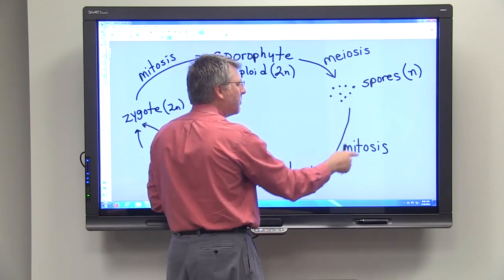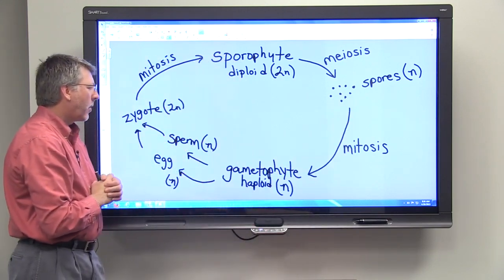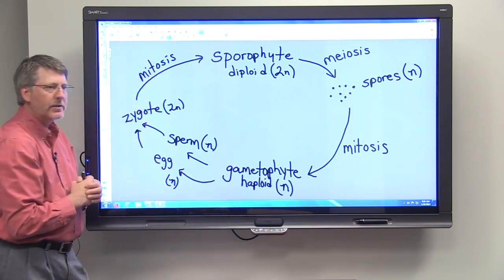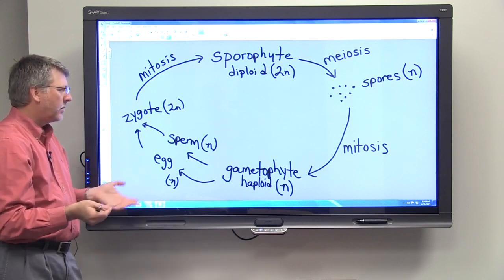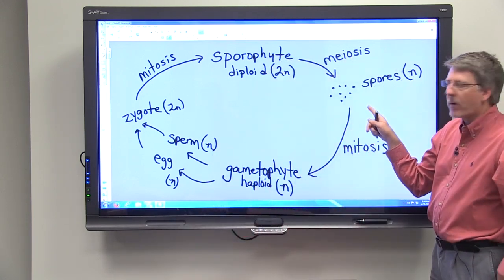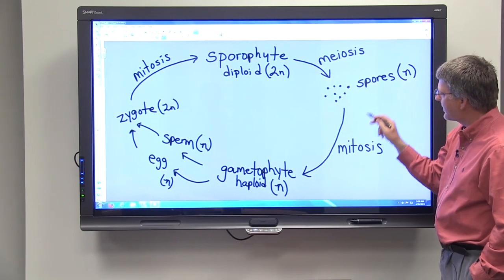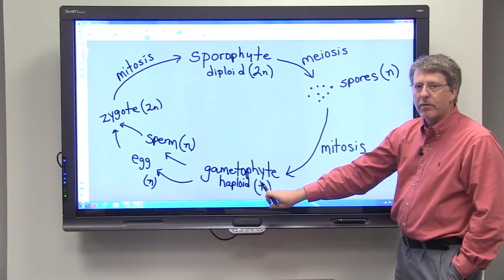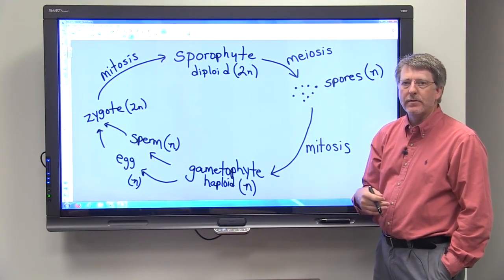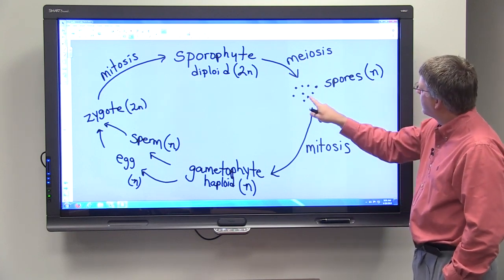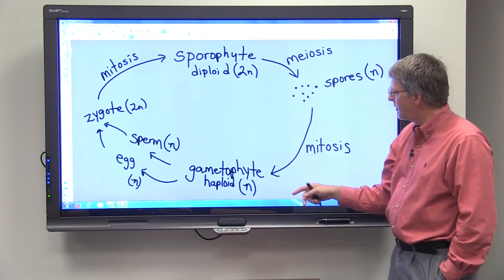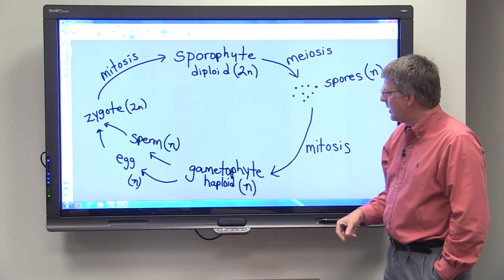And so this haploid spore will then divide by the process of mitosis and that results in the gametophyte generation. And the gametophyte generation, of course, is haploid. Now, sometimes this is confusing because this is the first time that you've probably heard of haploid cells dividing by mitosis and producing more haploid cells. But remember, with mitosis, one cell divides and produces daughter cells that are genetically identical. So this haploid spore will divide and produce two cells and then those two will divide and then those will divide and those will divide and we'll get a gametophyte.